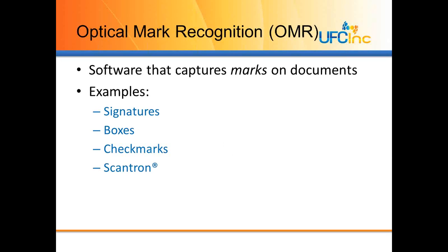The last type of recognition software is OMR. OMR software captures marks or special marks on documents. Some examples of these marks could be signatures, boxes, or check marks. And if you've ever seen a Scantron document, you'll recall that they are very structured and have boxes and lines and colors. Those boxes and lines and colors actually do have a purpose — they are so that when we use the OMR software, we can recognize the different responses on the form.